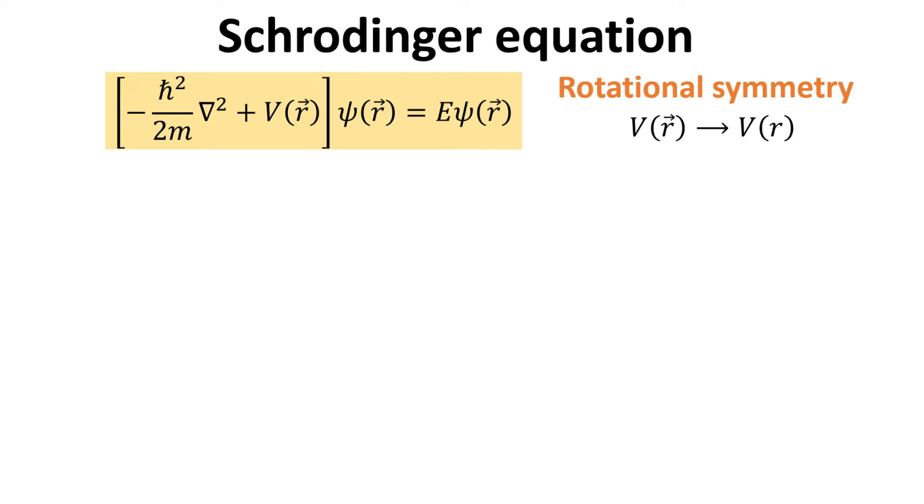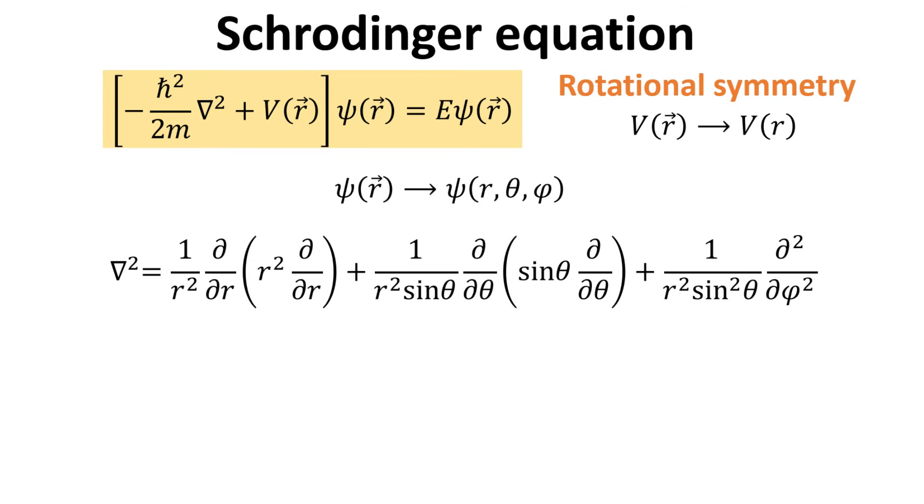The rotational symmetry of the hydrogen problem implies that the wave function would have a spherical harmonics part. We can express our wave function as function of the spherical coordinates, and the Laplacian in the Schrödinger equation is as shown.